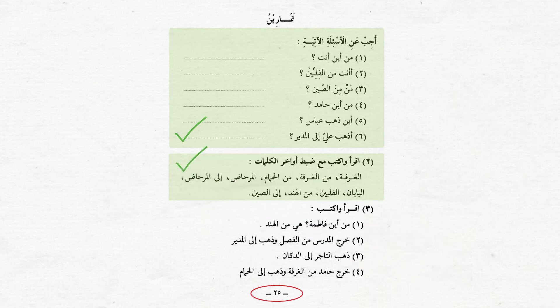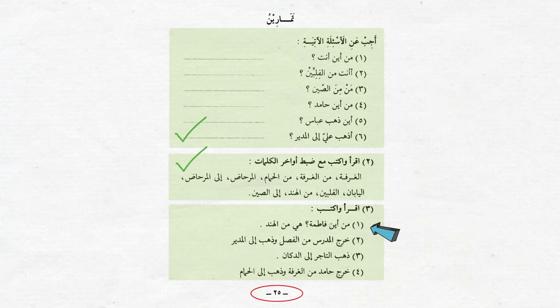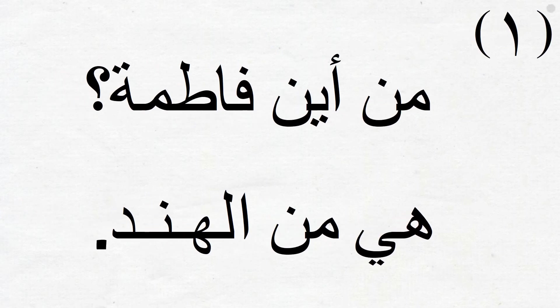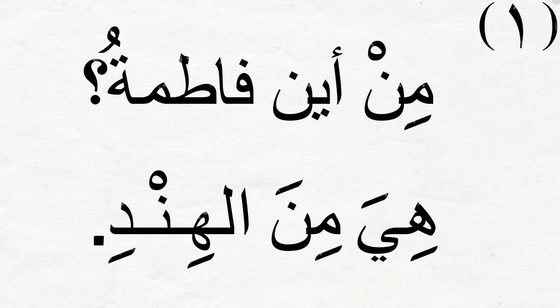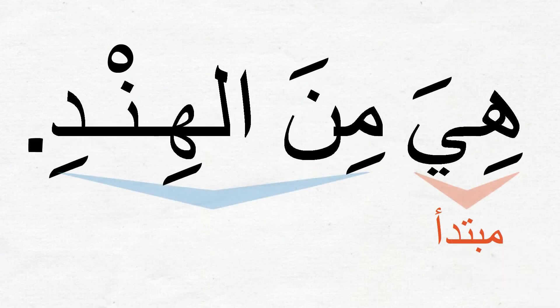In the next exercise at the bottom of page 25, we will practice our reading skills. The sentences do not have vowel signs and we will need to read them with correct vowels. The first example: Min aina Fatima? Hiya min al-Hindi. — 'Where is Fatima from? She is from India.' Our response here is jumla ismiya; hiya is the mubtada, and min al-Hindi is the khabar of the sentence.